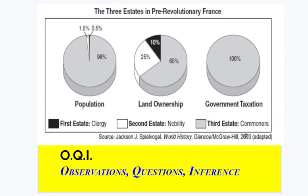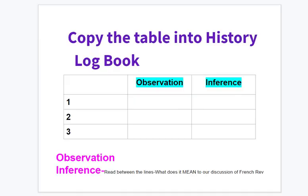Let's do another activity. Now set up in your notebook and we'll play with this observation. I'm going to look at a visual source — this is a primary source — and I'm going to break it down in three categories.